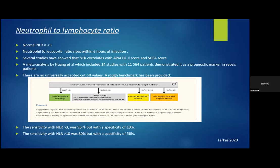The neutrophil-to-lymphocyte ratio, which is normally less than three, reflects the increase in cortisol and catecholamines within the first six hours causing an increase in neutrophils. Several studies have shown this ratio correlates with APACHE 2 score. A meta-analysis by Huang et al. including 14 studies with over 11,500 patients demonstrated it as a prognostic marker in sepsis. There are no universally accepted cutoff values. At a ratio greater than three, there is a sensitivity of 96% but specificity of only 10%. At a ratio of about 10, sensitivity drops to about 80% and specificity is only about 56% — again, not ideal as a marker of sepsis.